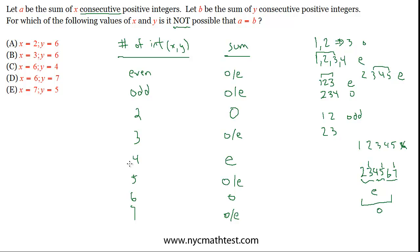But let's look at the ones that have to be something. Two has to be odd. Four has to be even. Six has to be odd. We're looking for a situation where it's not possible for their sums to be equal. So we're looking for a situation where x and y have values that make it so that one of the sets has to be odd and one of the sets has to be even, which means there's no way A could equal B.